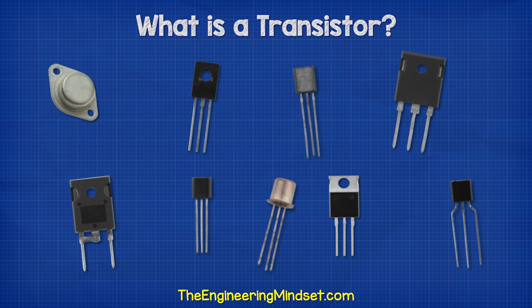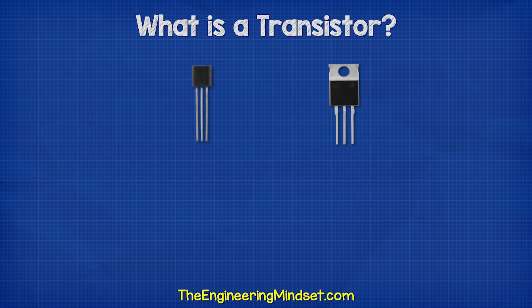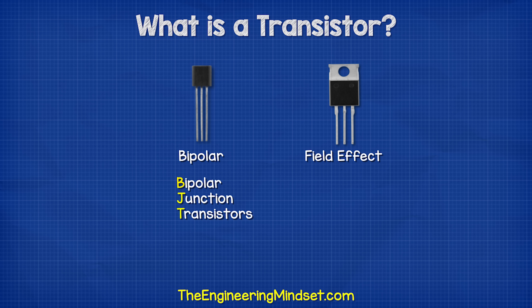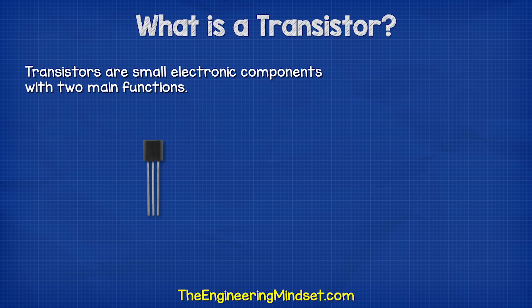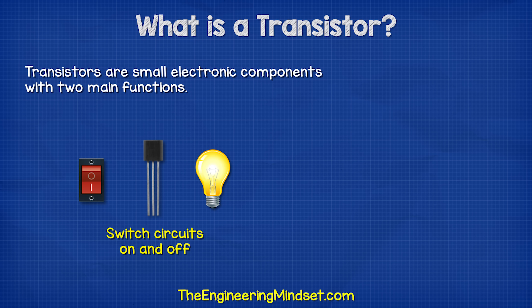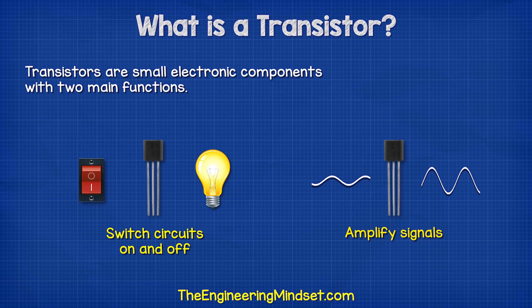Transistors come in many shapes and sizes. There are two main types: the bipolar and the field effect. We're going to mostly focus on the bipolar version in this video. Transistors are small electronic components with two main functions: they can act as a switch to control circuits, and they can also amplify signals.